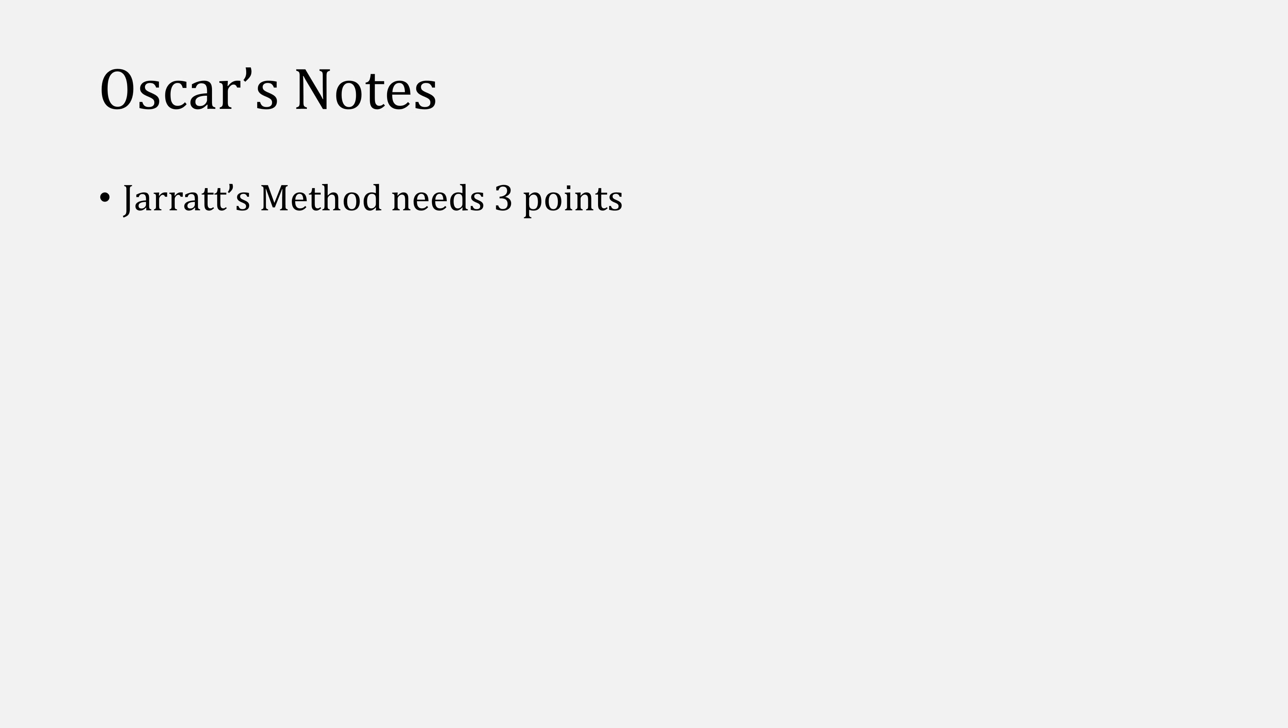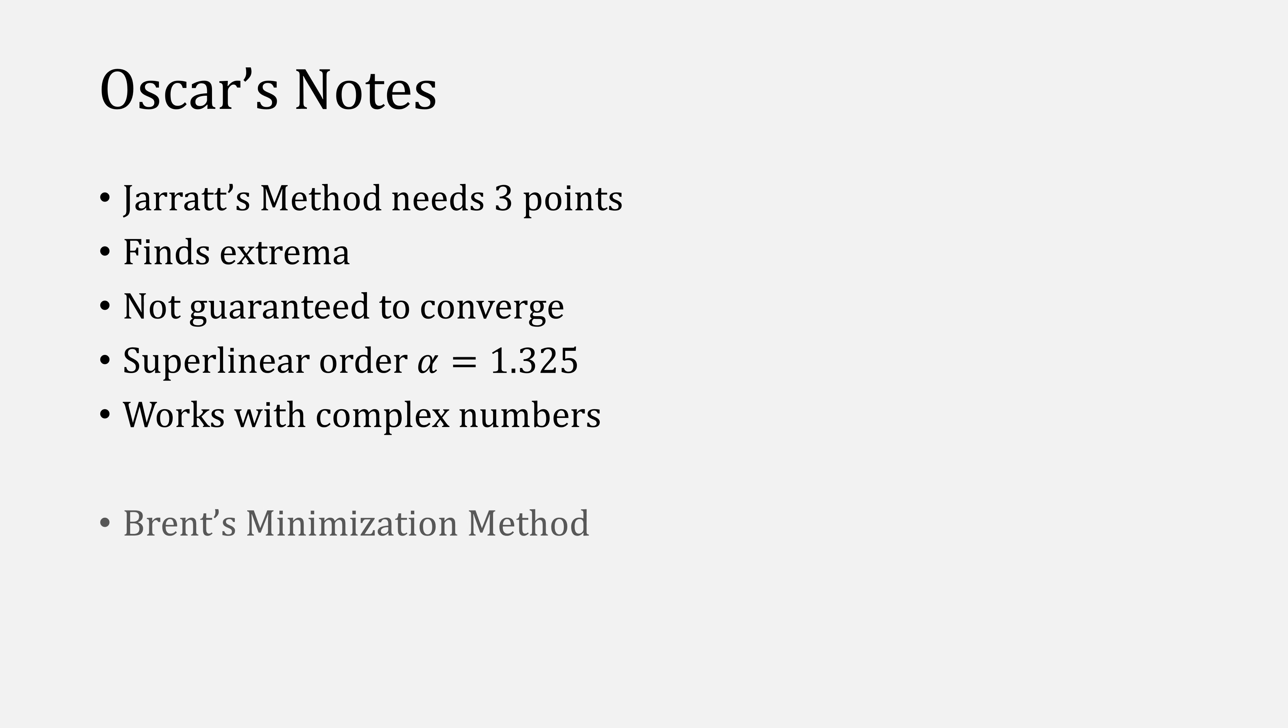Some key points are that Jarratt's method needs three starting points and that it finds extrema, any extrema. This includes maximum and inflection. It's also not guaranteed to converge, but when it does, it will do so with a super-linear order. It also works with complex numbers. Definitely check out Brent's minimization method, which builds heavily on Jarratt, and the code that I used as well as the images I created will be posted on GitHub.